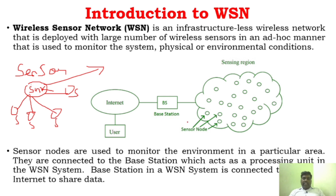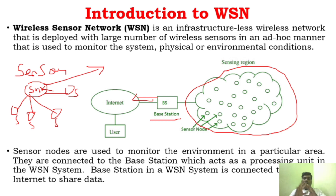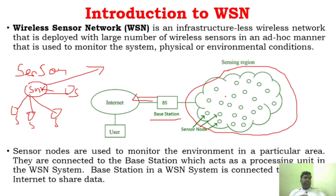The sink can be of different types. As you can see in this diagram, it can be a base station. These are the sensor nodes, and this is the sensing region — we are sensing this region using different sensors. That information is collected at the base station, which can then be stored on the internet so that any user can access that information. This is the normal function of a wireless sensor network. Only the base station is connected to the internet — the sensors are not directly connected to the internet.